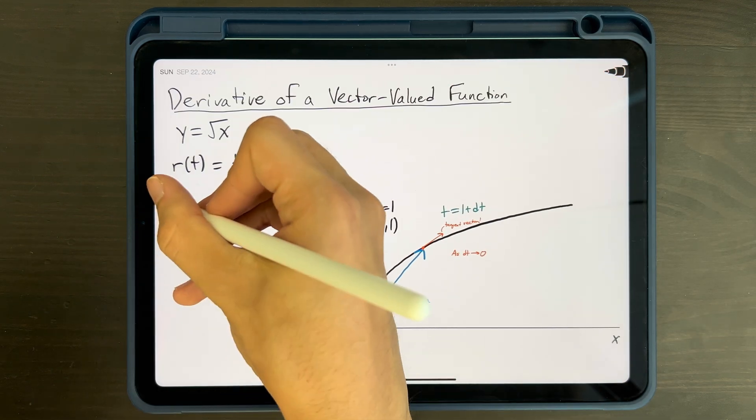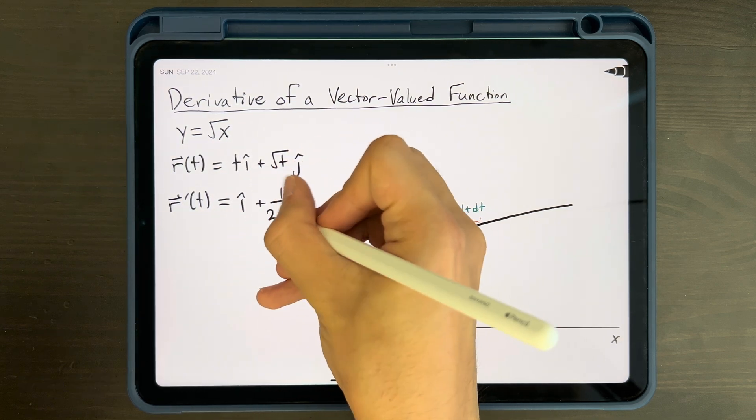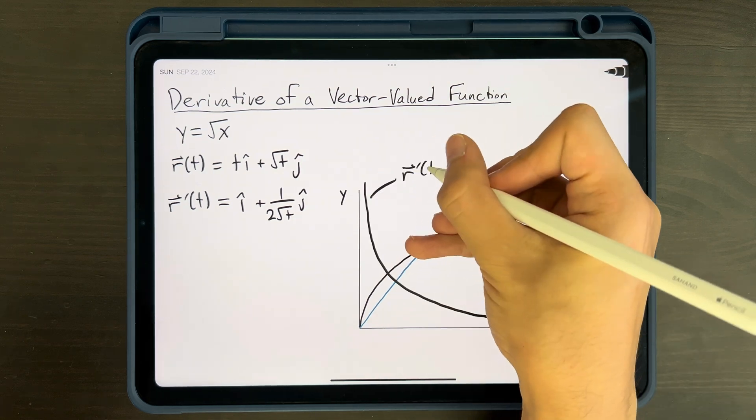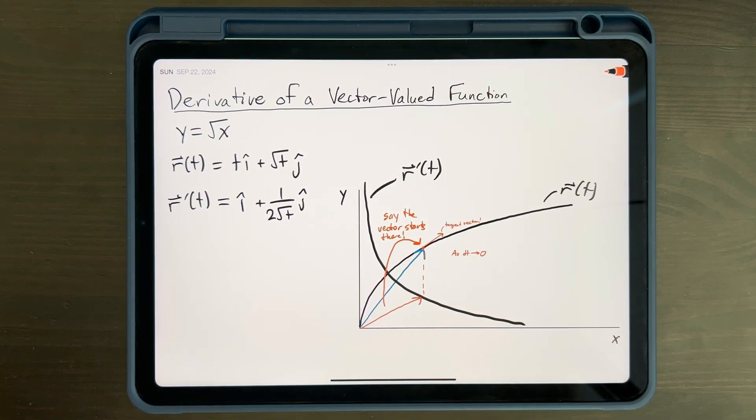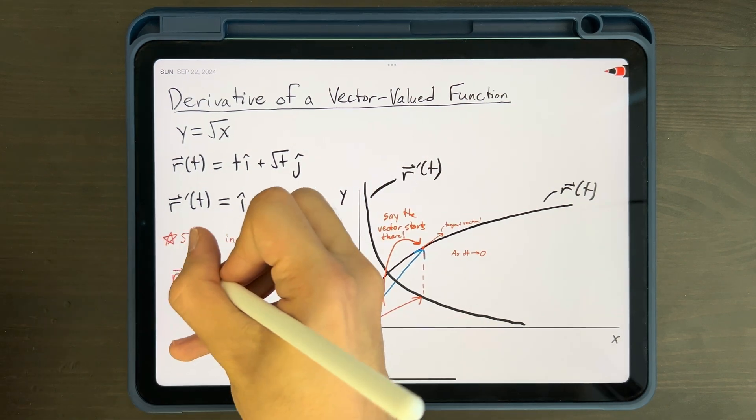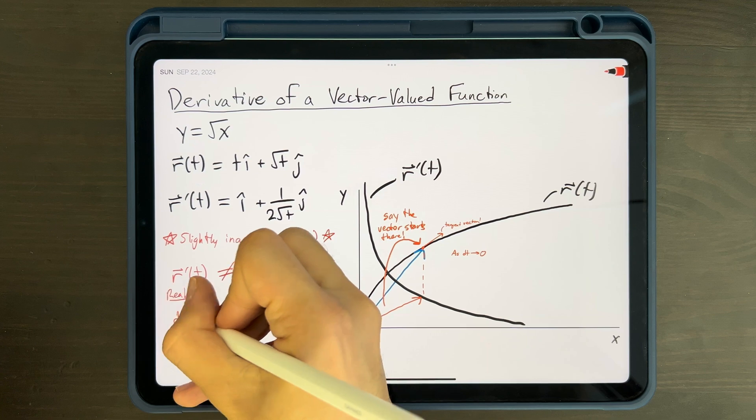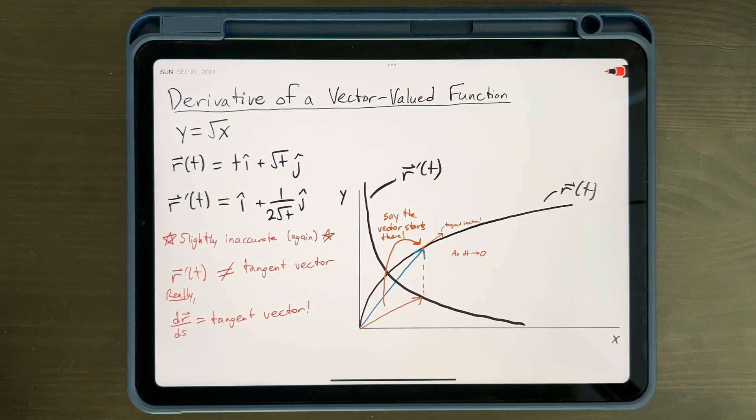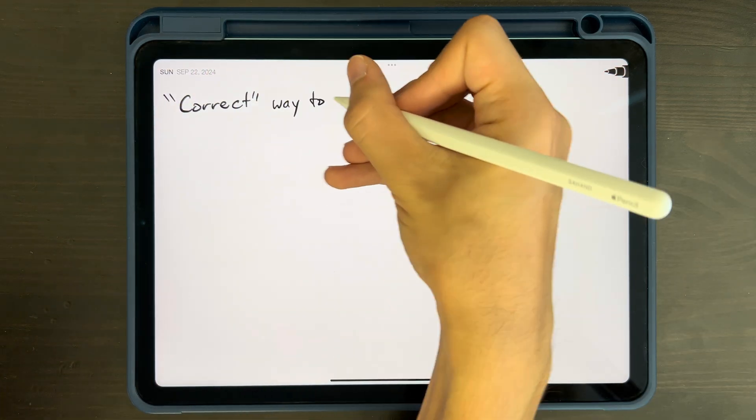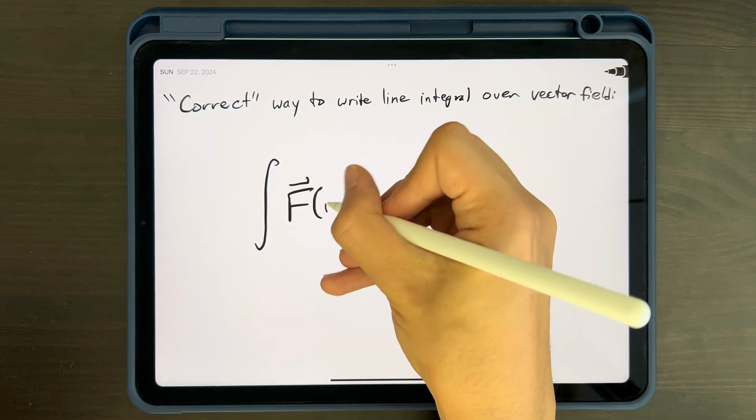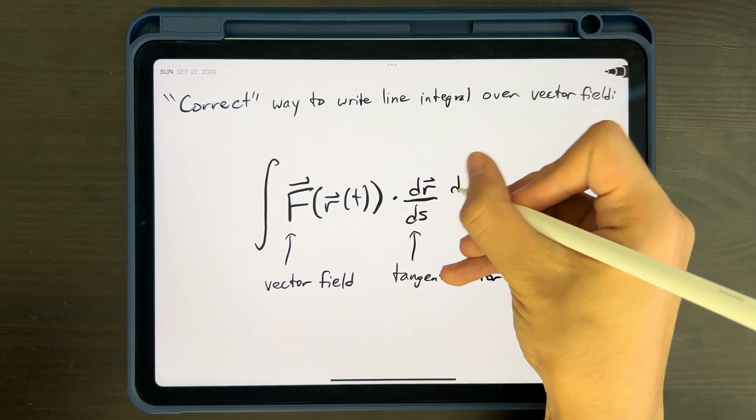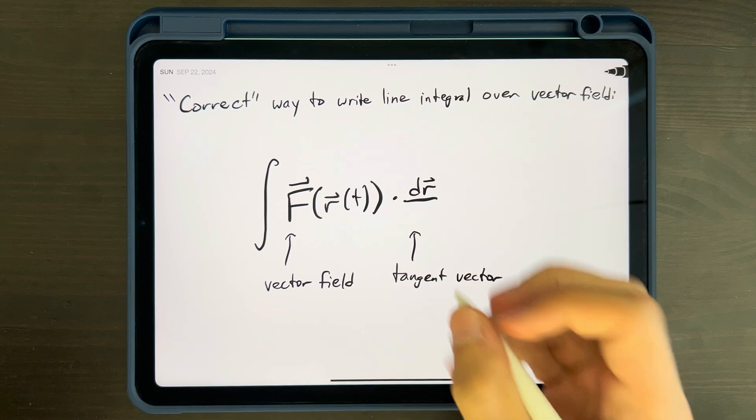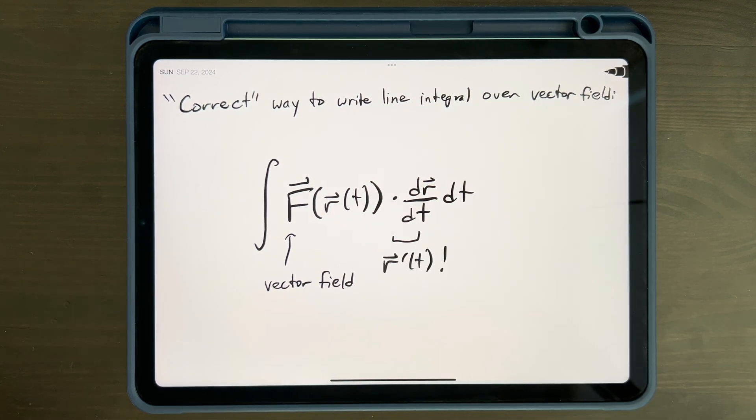We can actually represent that by the difference between these two vectors, which is itself a vector. As dt approaches 0, this difference vector becomes a vector tangent to the curve at t equals 1. So while it is true that if I take the derivative of this VVF, I'll get r of t equals i-hat plus 1 over 2 times square root of t j-hat, which I can graph as its own curve, what makes intuitive sense is to move these vectors that start at the origin to start at the point on the curve which they represent the derivative of. Now this intuitive explanation is slightly inaccurate. r prime of t doesn't actually give us the tangent vector. dr/ds does, where ds is an infinitesimal step along the integrating curve. And so the correct way to write this integral would be like so: integral of f dot dr/ds ds. However, we can easily see with the chain rule that this is equal to the original integral we derived earlier. ds can be written as ds over dt times dt, and we end up with dr/dt dt, which is equivalent to r prime of t dt.